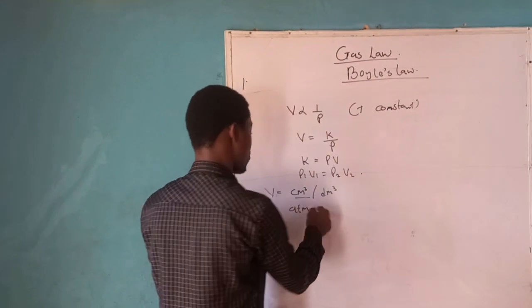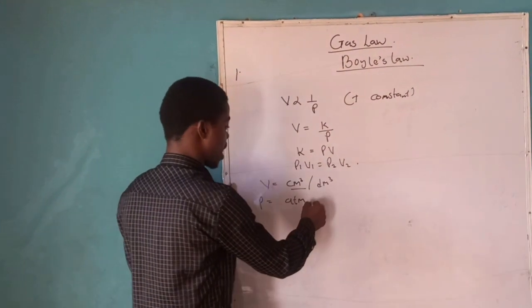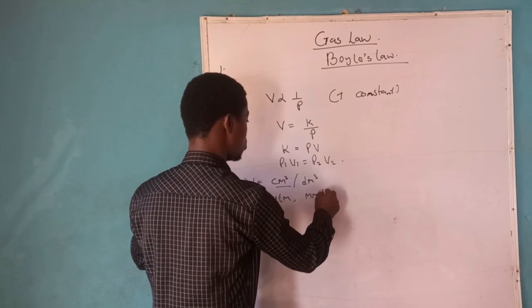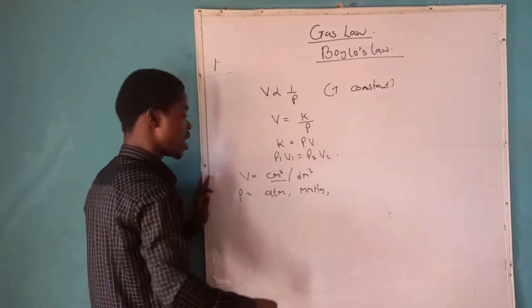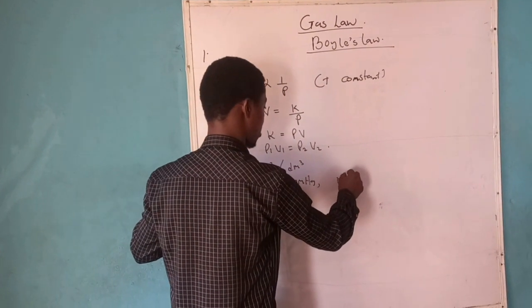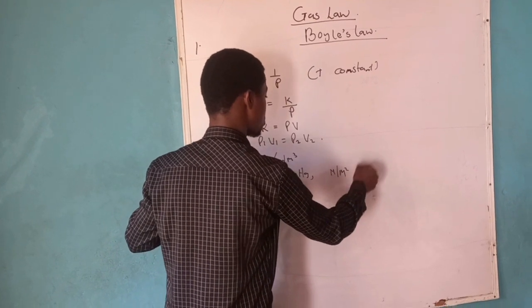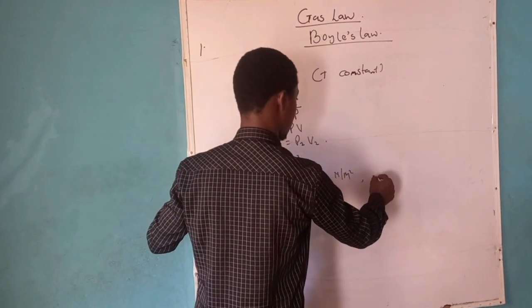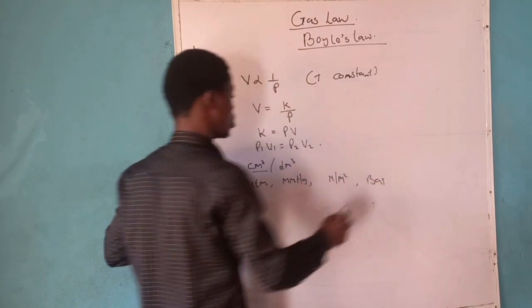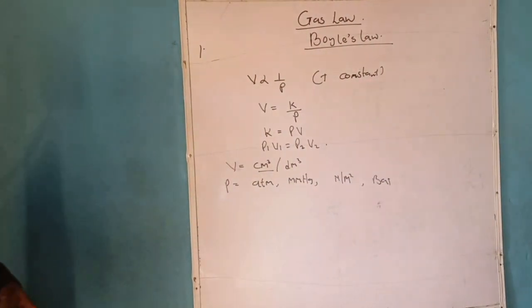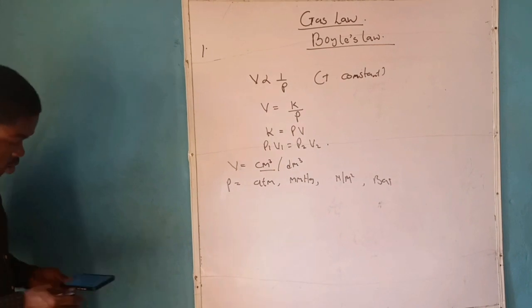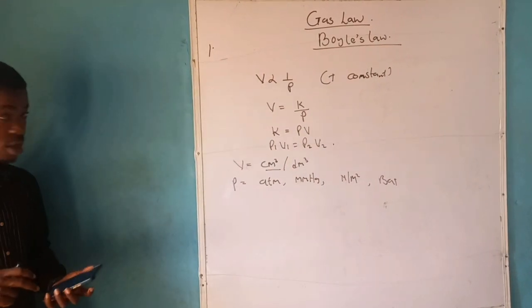You can have ATM, which is atmospheric pressure. You can have mmHg, which is millimeter mercury. You can have Newton per meter square. You can also have a bar. So these are units of the pressure of a gas.